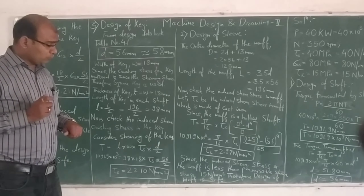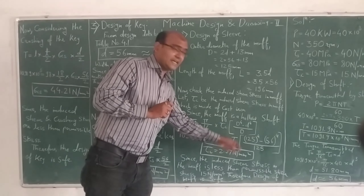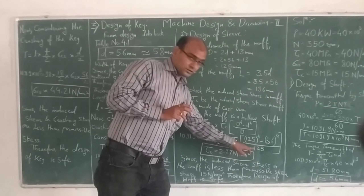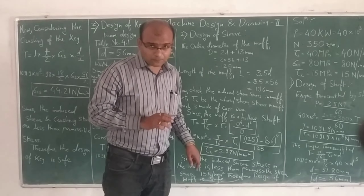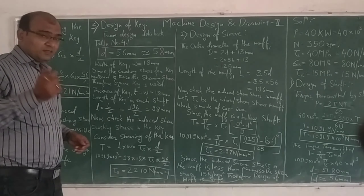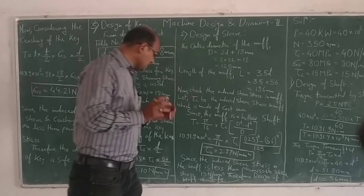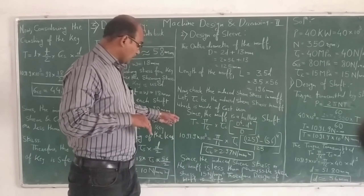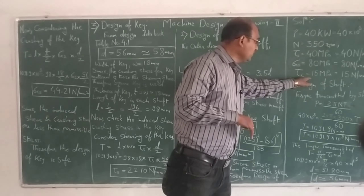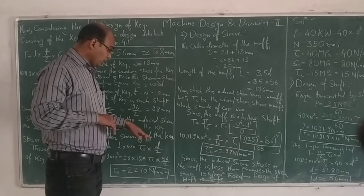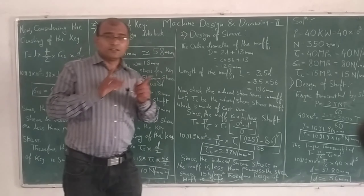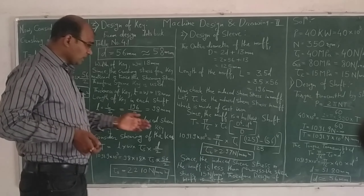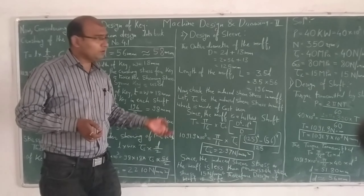The formula used here is specifically for the hollow shaft, whereas T = (π/16) × τ × d³ is for the solid shaft. Since the induced shear stress in the muff of 2.97 N/mm² is less than the permissible shear stress of 50 MPa given in the problem, the design of the muff or sleeve is safe.